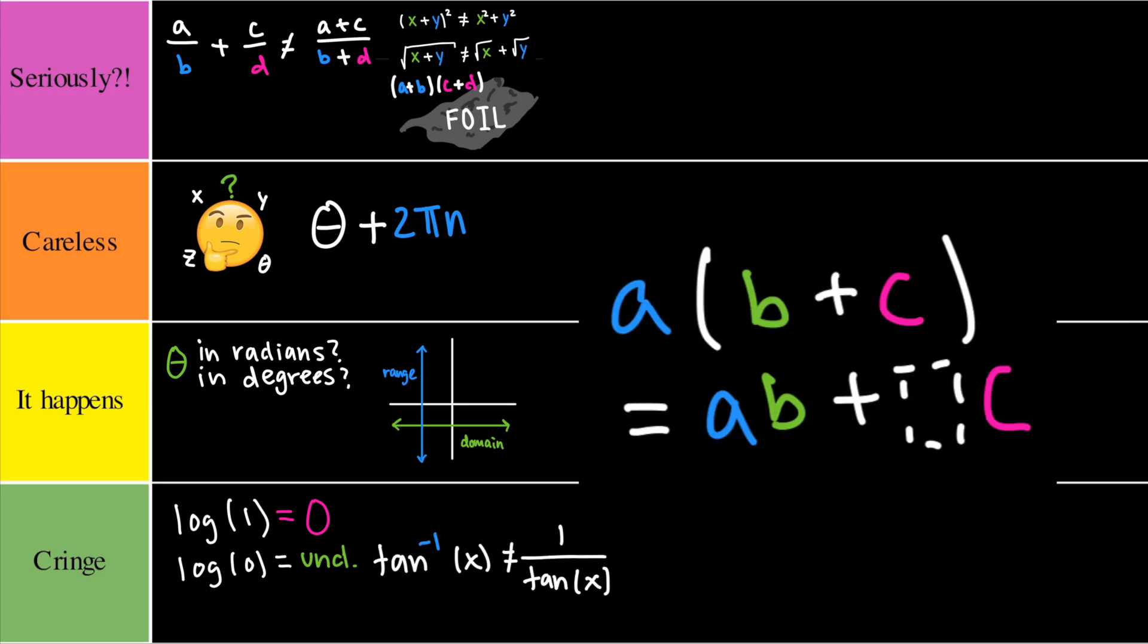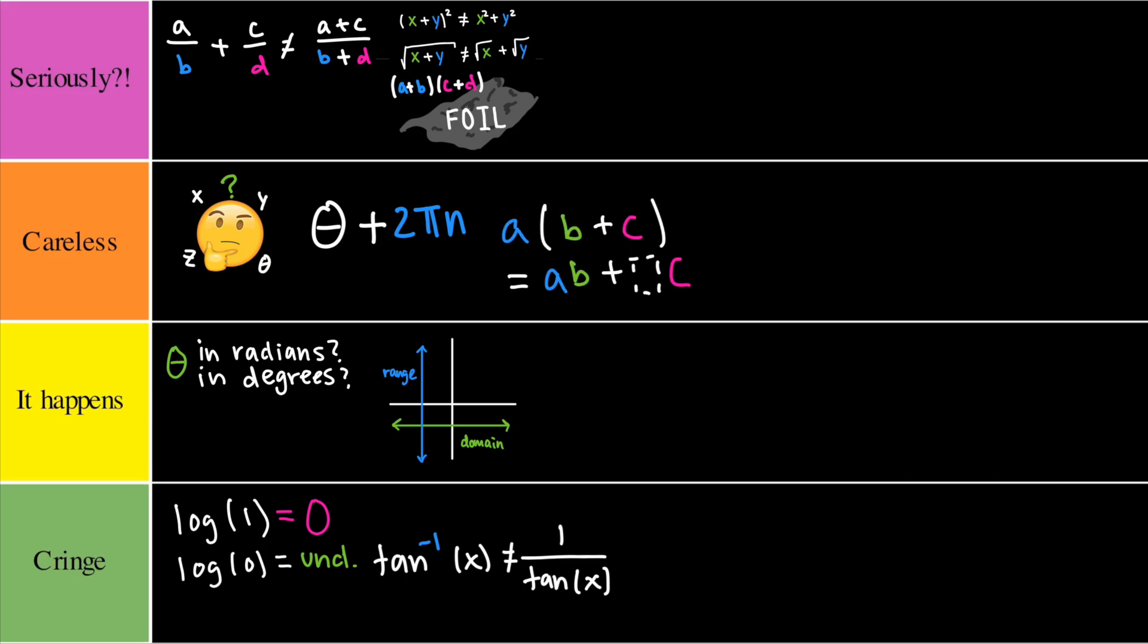Next up we got forgetting to distribute everything. Now this would have to go into the careless category, simply because if you're working really fast you might forget to multiply a term. But don't make this mistake.